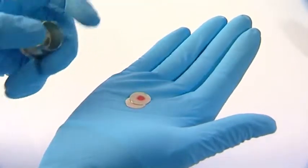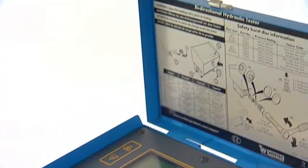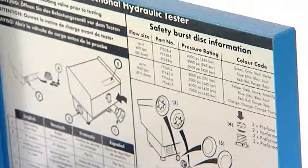Take two new safety burst discs from the spare disc holder and check they are the correct diameter and pressure rating, which is indicated by their colour against the instruction label.